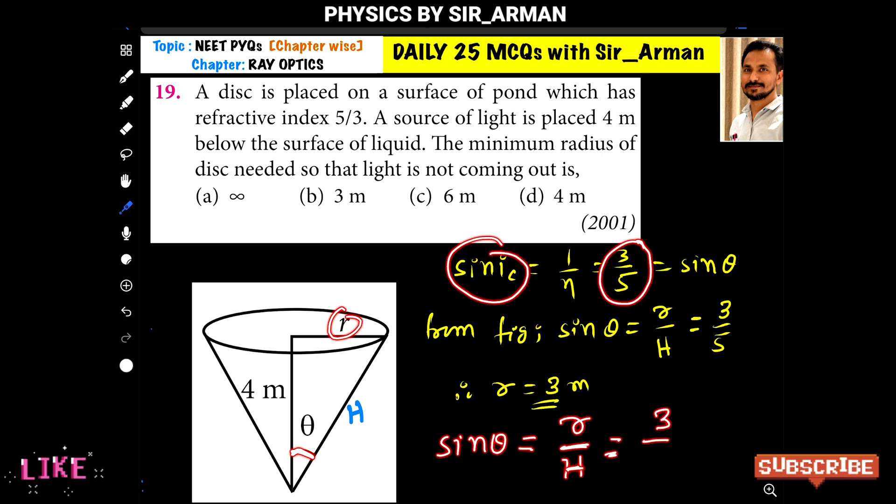So, we can say radius is 3 and hypotenuse is 5. And we want radius. So, radius is 3. Because this side is 4 and the ratio of these two sides is 3 by 5 that we have obtained. It means the radius is 3 meter.